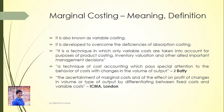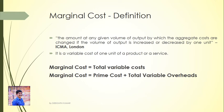The ICME London definition: Marginal costing is the ascertainment of marginal cost and of the effect on profit of changes in volume or type of output by differentiating between fixed cost and variable cost. It differentiates to understand cost behavior and volume.